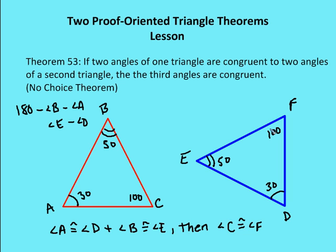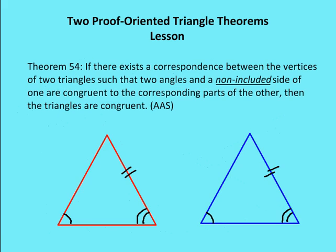You have no other choice based on the fact that the sum of the measures of the angles in a triangle equal 180 degrees. All right, let's talk about our second theorem.